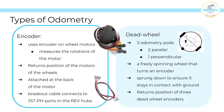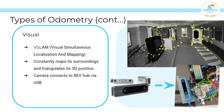The last type is visual odometry. This is also called VSLAM, which stands for visual simultaneous localization and mapping. It constantly matches its surroundings and triangulates its position through the camera. The camera is connected to the REV control hub via a USB port.